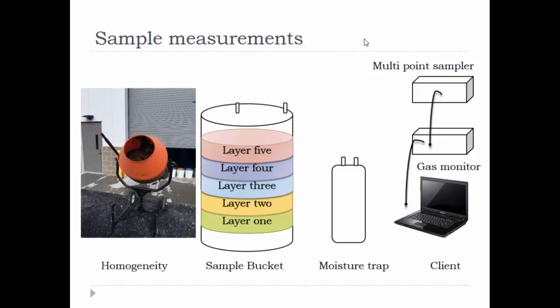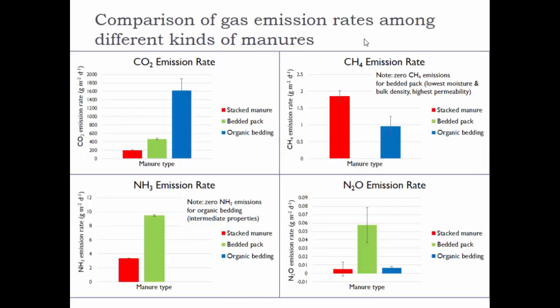To make sure the manure samples were homogenous, a blender was used to mix the samples. Then the samples were added to the bucket layer by layer. A gas monitor was used to measure the emission rates. Because moisture from the sample can reduce the machine accuracy, a moisture trap was added between the sample and the gas monitor.